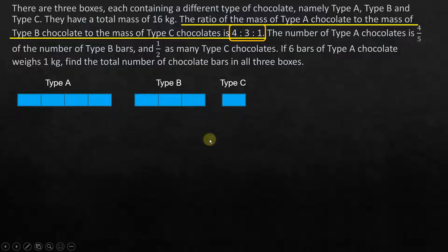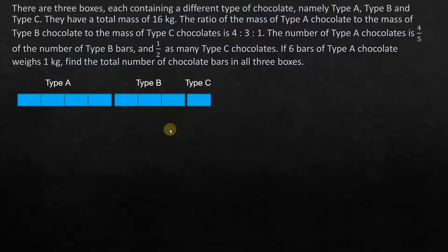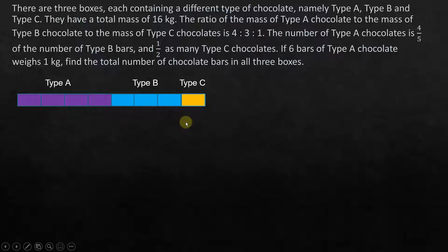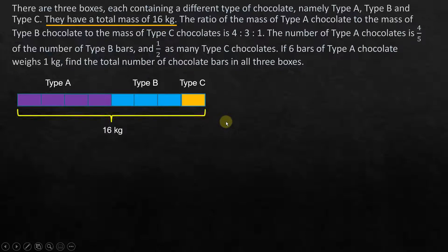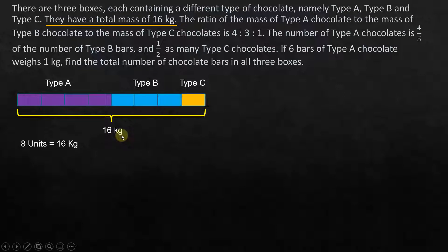Let's bring them together and color-code them so we know this is type A, this is type B, and this is type C — that's just for clarity. They have a total mass of 16 kilograms, so this whole thing is 16 kilograms. Now we've got 1, 2, 3, 4, 5, 6, 7, 8 units — 8 units total — and that is equal to 16 kilograms.